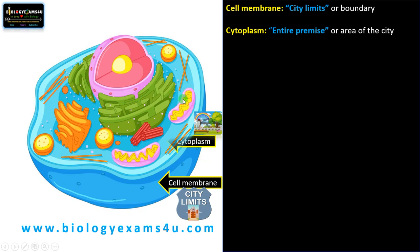Cytoplasm can be compared to the entire premise or area or environment of the city where everything is happening. In a cell, the cytoplasm is a semi-fluid jelly-like substance where all organelles are embedded, along with different enzymes, biomolecules, ions, etc.